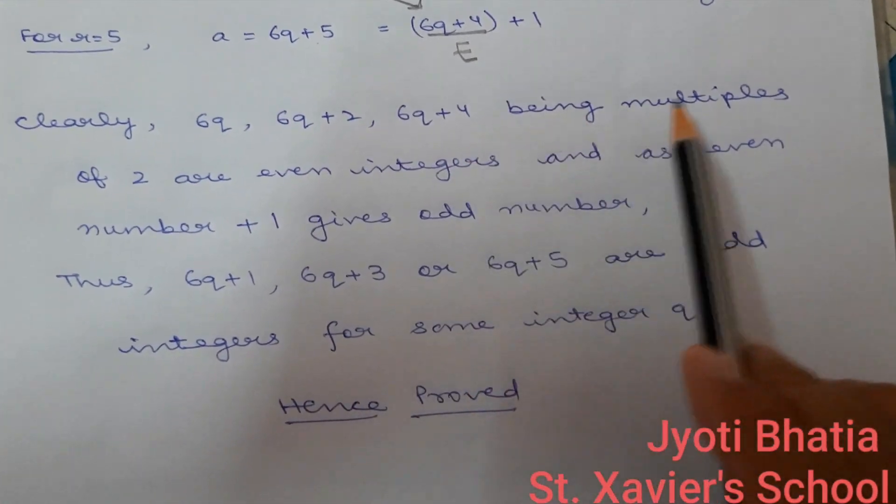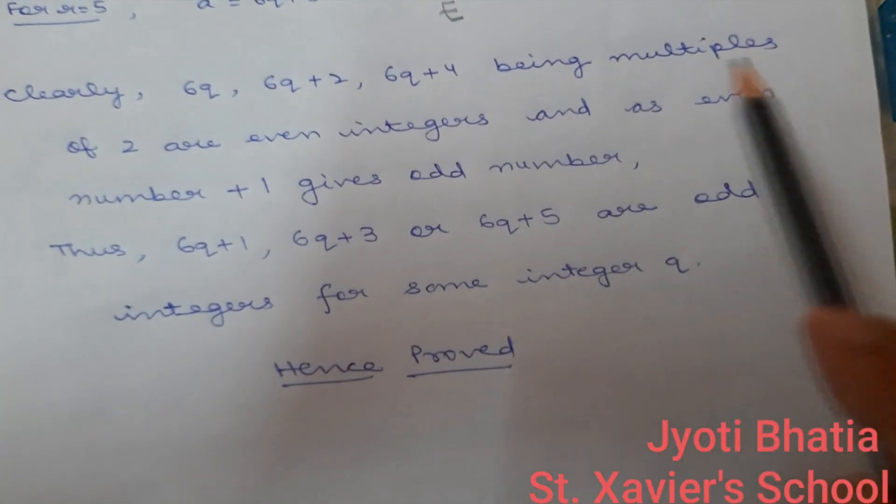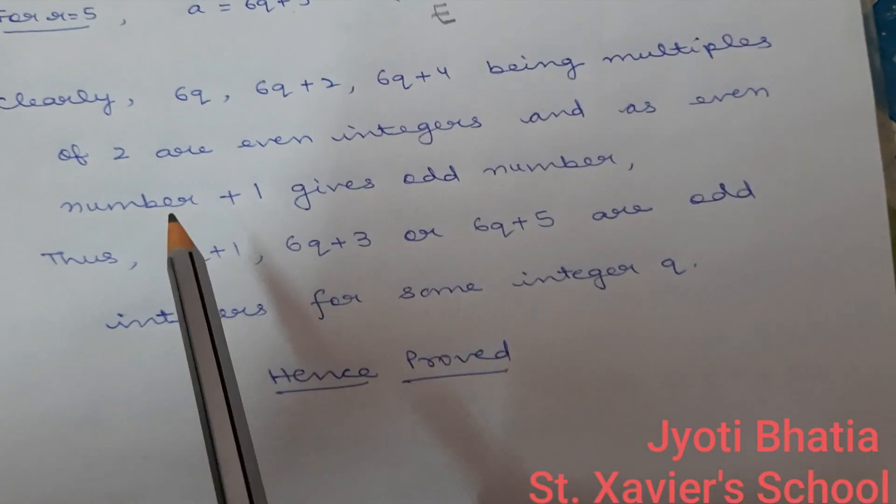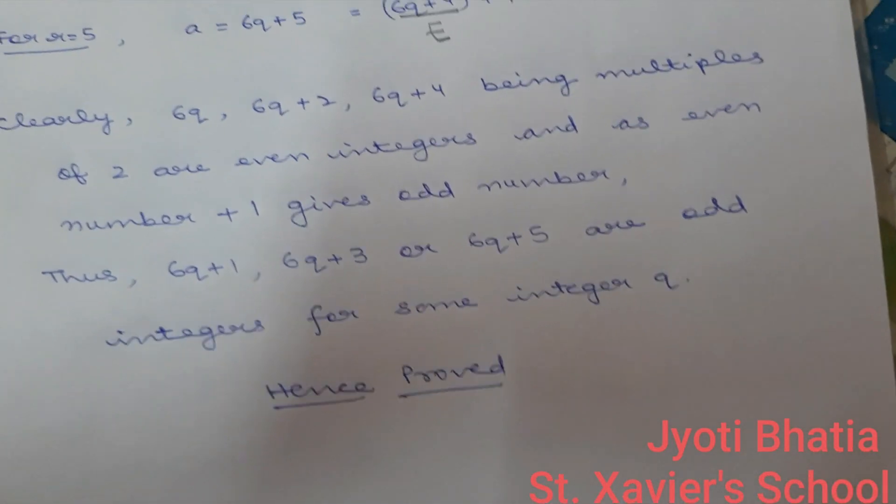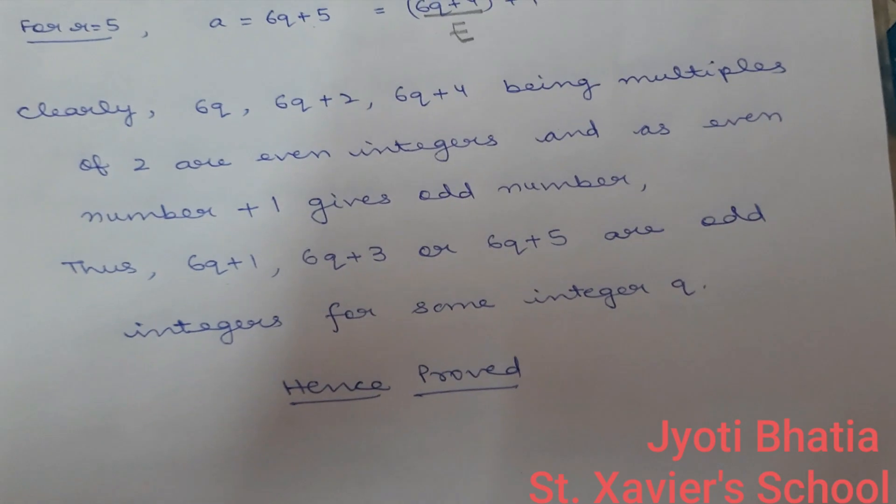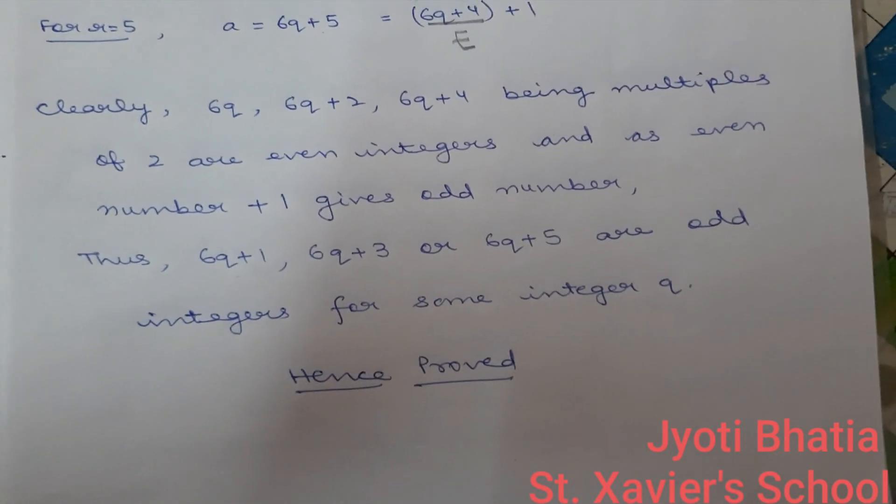6q, 6q plus 2, 4 being multiples of 2 are even. And as even plus 1 gives odd. Thus, 6q plus 1, 6q plus 3 or 6q plus 5 are odd integers. Hence, proved. Thank you.